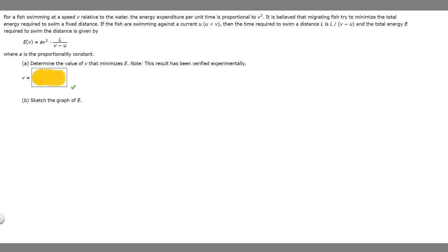Basically for part a all we got to do is take the derivative of this function that they give us and then set it equal to zero and then solve. So E(v) is equal to av²L over v minus u. I'm just going to write that up top.